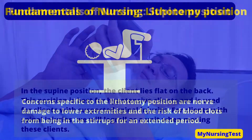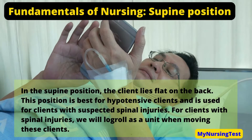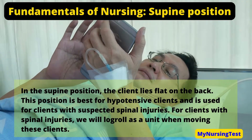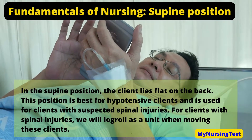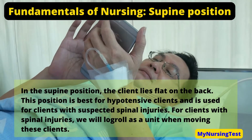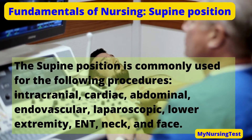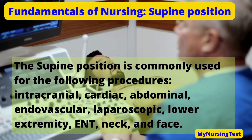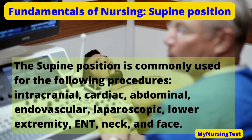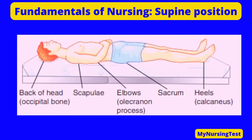In the supine position, the client lies flat on the back. This position is best for hypotensive clients and is used for clients with suspected spinal injuries; for clients with spinal injuries, we will log roll as a unit when moving them. The supine position is commonly used for intracranial, cardiac, abdominal, endovascular, laparoscopic, lower extremity, ENT, neck, and face procedures. Concerns include skin integrity changes, as the supine position places extra pressure on the back of the head, scapula, elbows, sacrum, and heels. The client must be turned and repositioned every two hours to prevent pressure injuries.